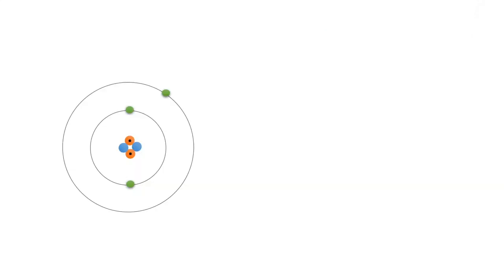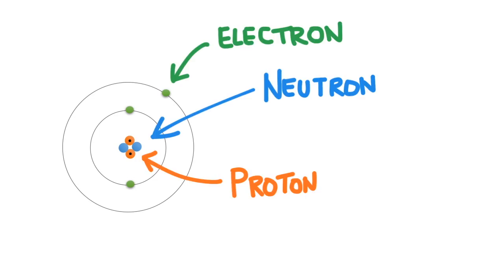The atom is composed of three subatomic particles. That means particles that are smaller than the atom. These three particles are protons, neutrons, and electrons.